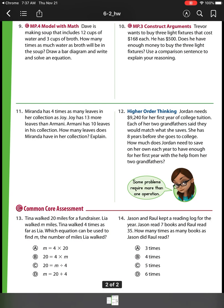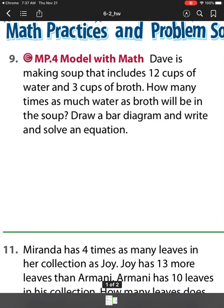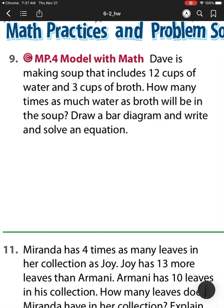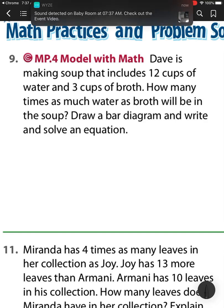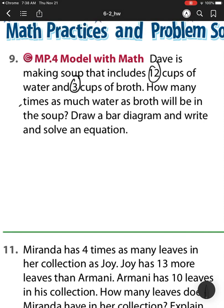Let's head to our next problem, which is on the back page. So now we have Dave is making soup that includes 12 cups of water and 3 cups of broth. How many times as much water as broth will be in the soup? Draw a bar diagram and write and solve an equation. Well, we have 3 cups of broth, and he needs 12 cups.